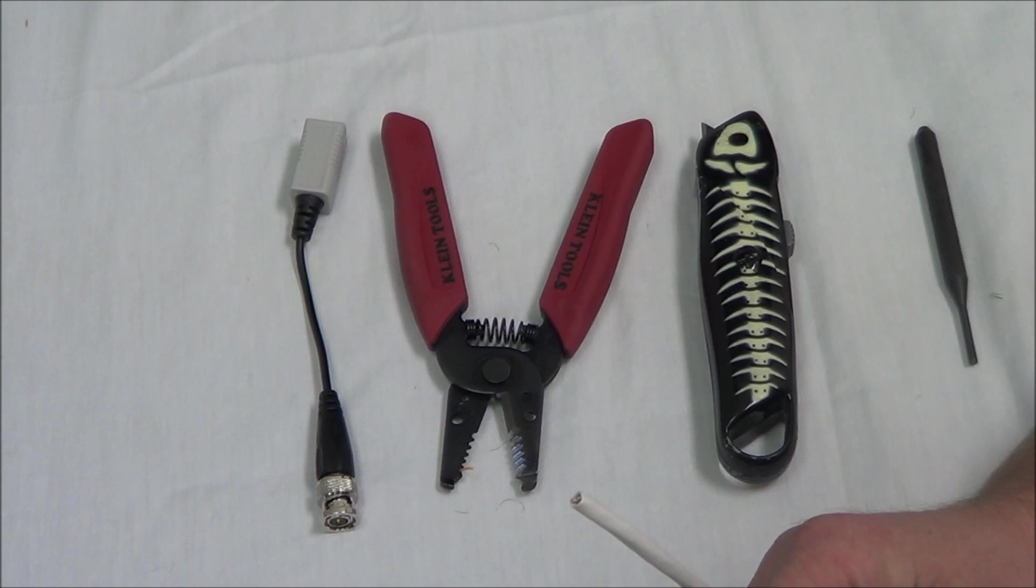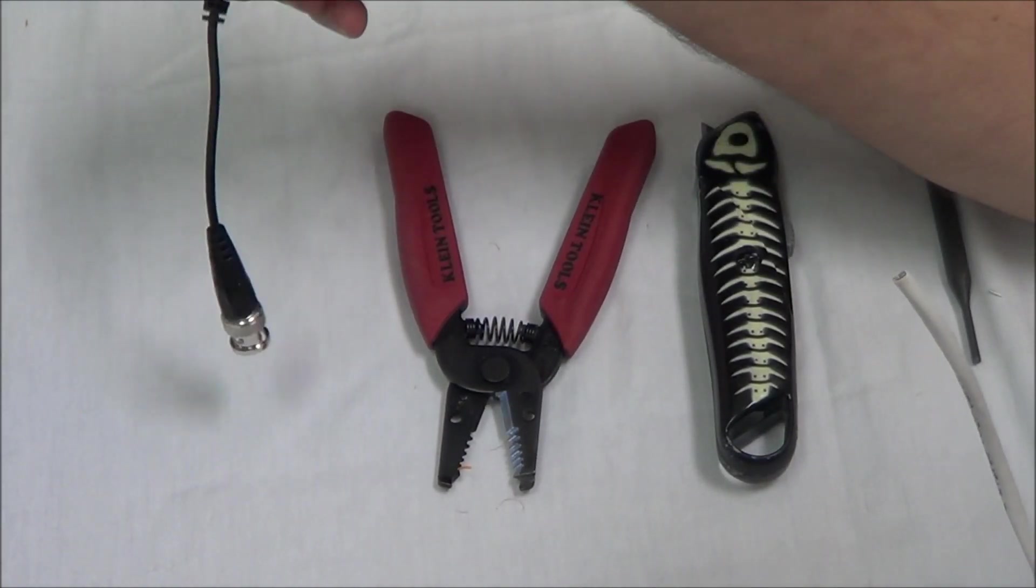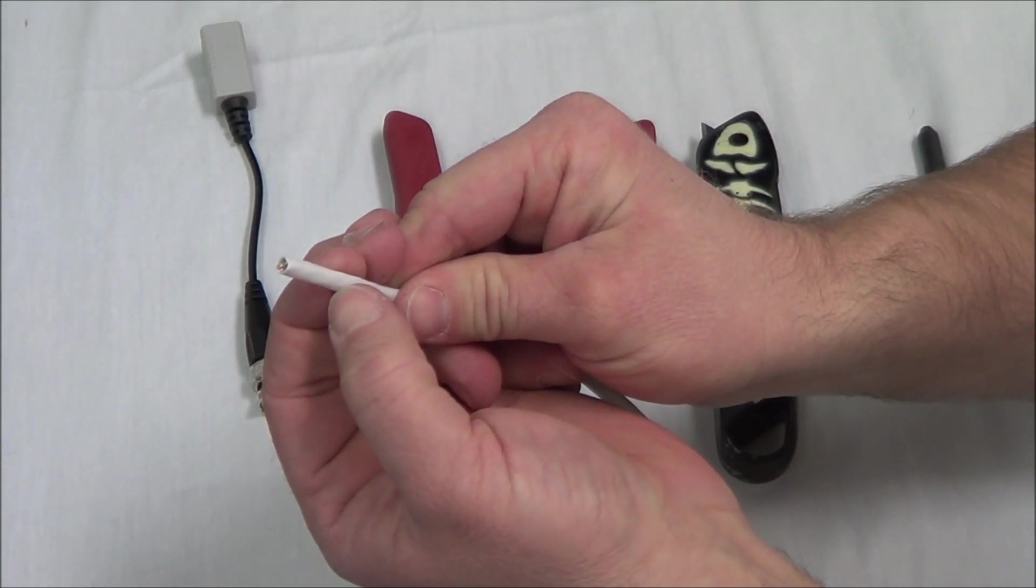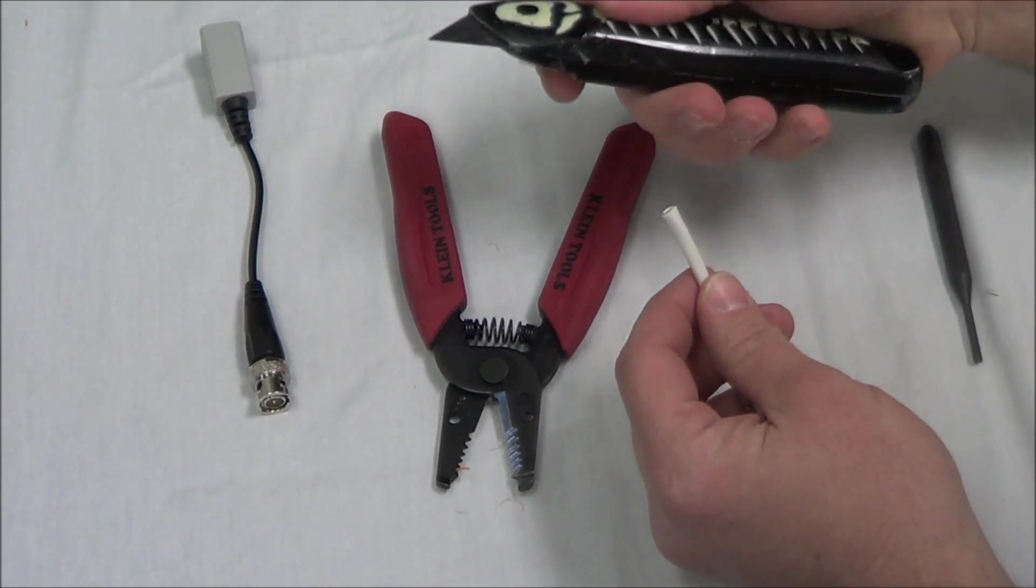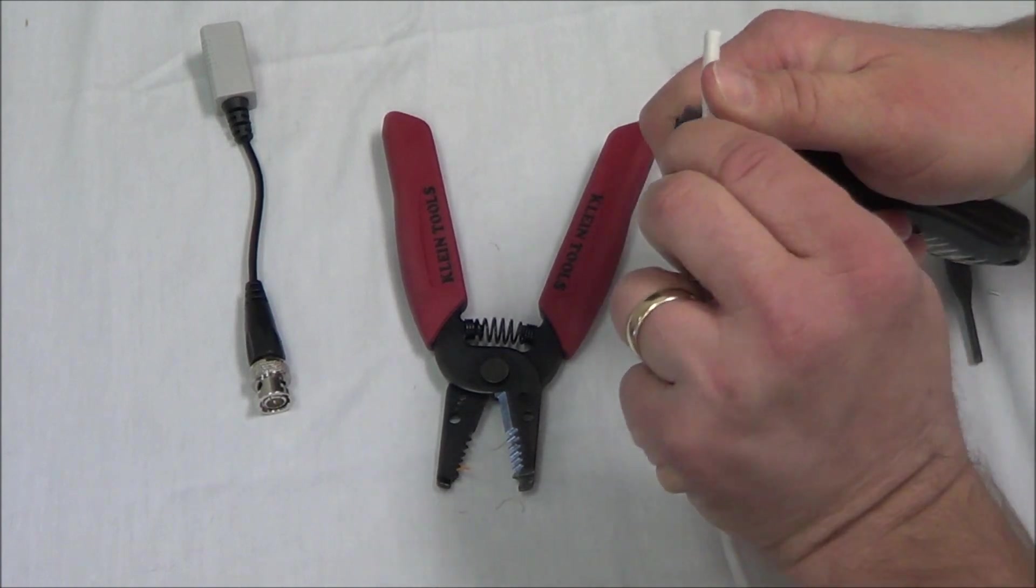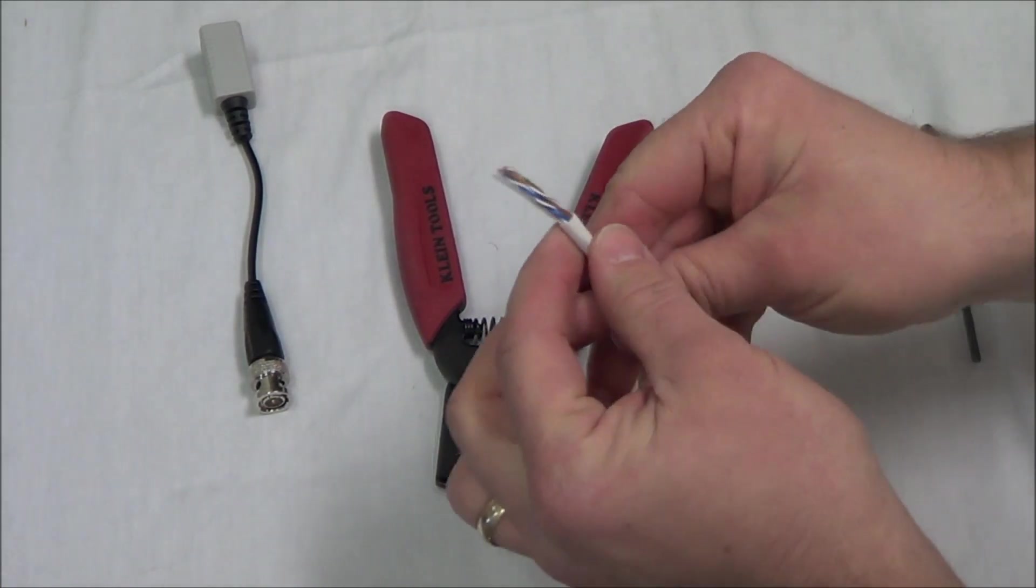I want to show you how to attach a BNC connector to a Cat5 cable using this video balun. The first thing we need to do is get rid of the outer covering and get to the wires inside. We'll take our utility knife, just score it a little bit, bend it, and pull it off.